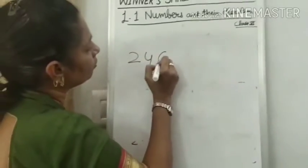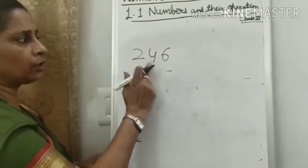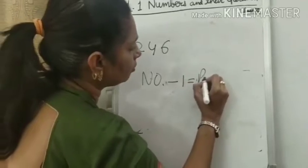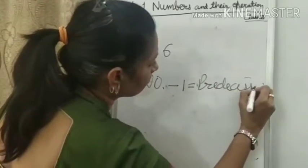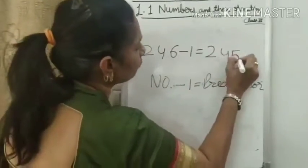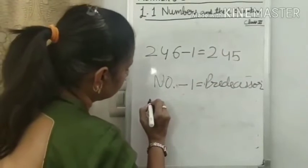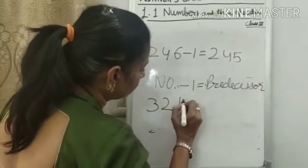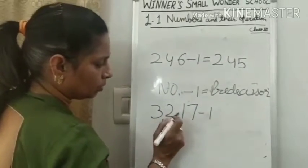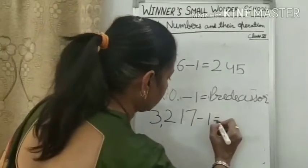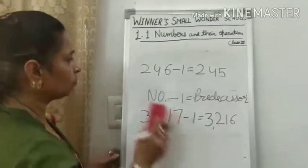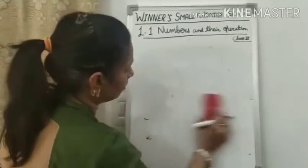For example, the given number is 246. Then number minus 1: 246 minus 1. The answer is 245, which is the predecessor. Next, the number is 3,217. Then, 3,217 minus 1. The answer is 3,216.